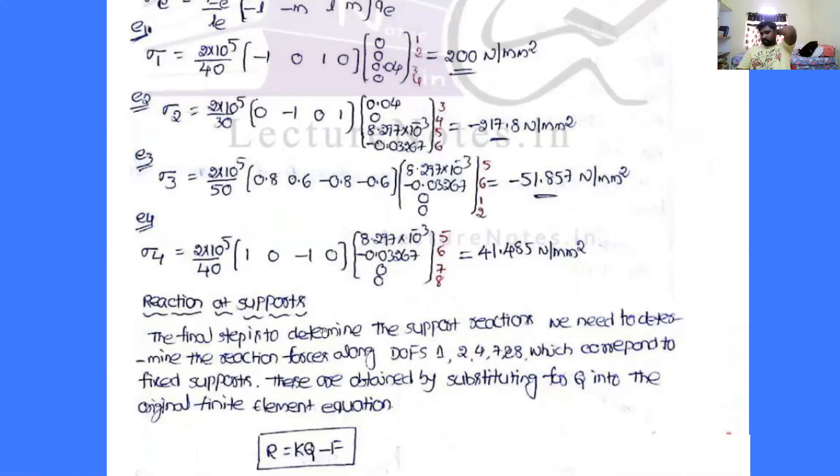Reaction at supports. The reaction at supports law. DOF find out just 1, 2, 4, 7, and 8 which are kind of, therefore reaction is equal to Kq minus f. But we consider the degrees of freedom where there is a degree of freedom, nothing but 1, 2, 4, 7, 8, the joints.